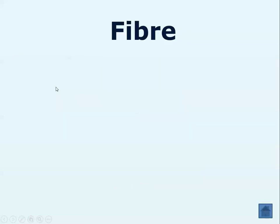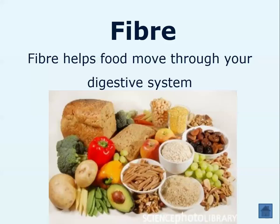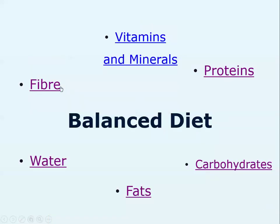Now, fibre. Fibre is a nutrient that actually isn't absorbed in our body — it's there to help food move through your digestive system. For want of a better word, it's there to help you expel your faeces. Fibre is found in many different forms: brown bread, chickpeas, dried fruits, and if you look carefully, avocados make an appearance again, as do potatoes.